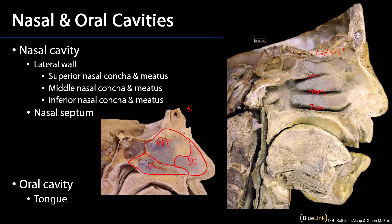Posterior to the nasal cavity, as we move through two openings called the choanae, we'll enter into the nasopharynx. The nasopharynx is then contiguous with the oropharynx, which is then contiguous with the laryngopharynx.